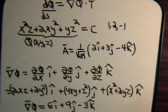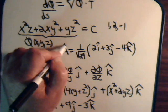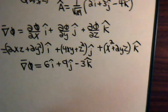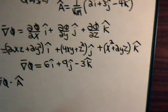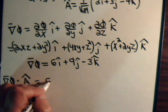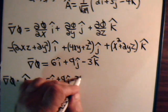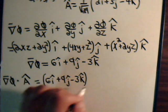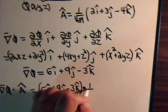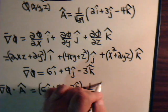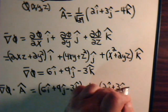We want to take the dot product of this with the unit vector a. That's supposed to be a unit vector. So let's write this out then. We will have del psi dot product with the unit vector a. That will equal 6i plus 9j minus 3k and the unit vector a is 1 over the square root of 29 times 2i plus 3j minus 4k.